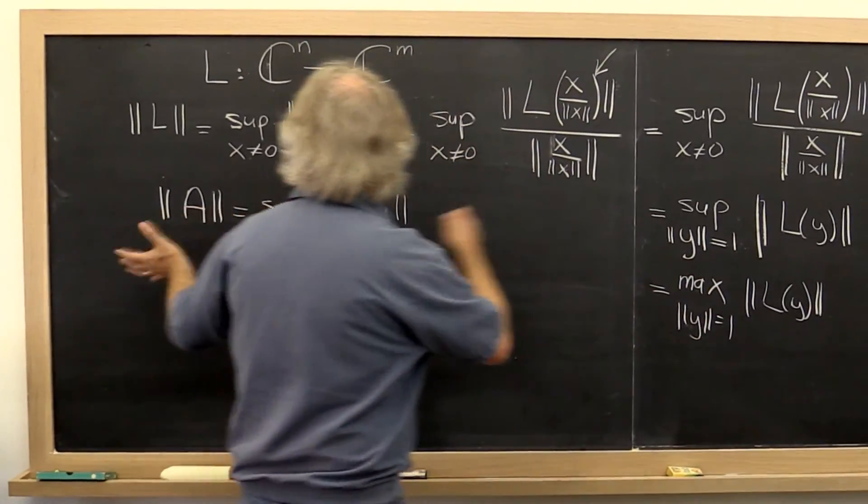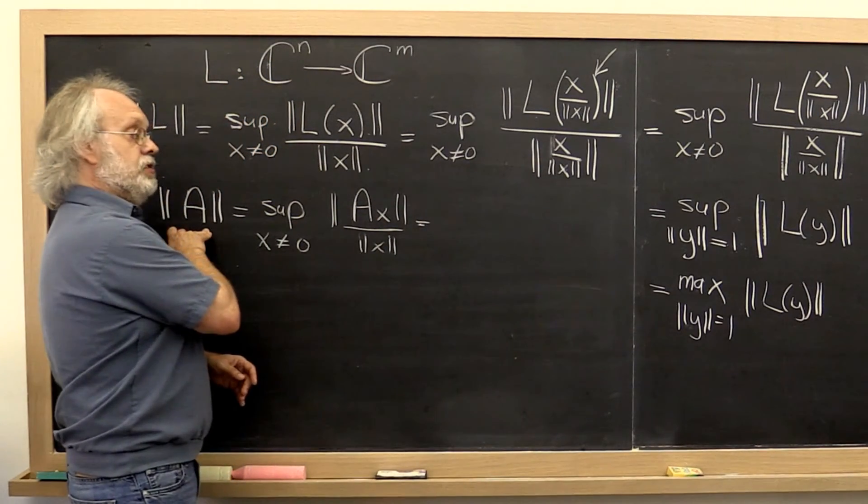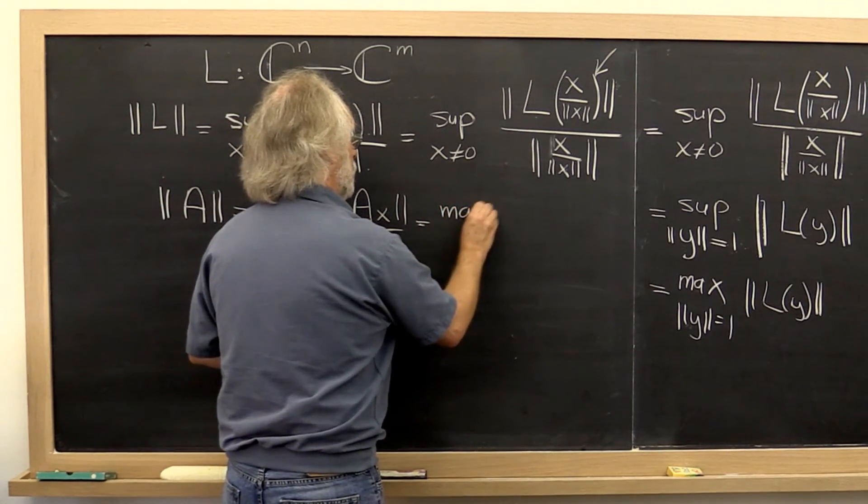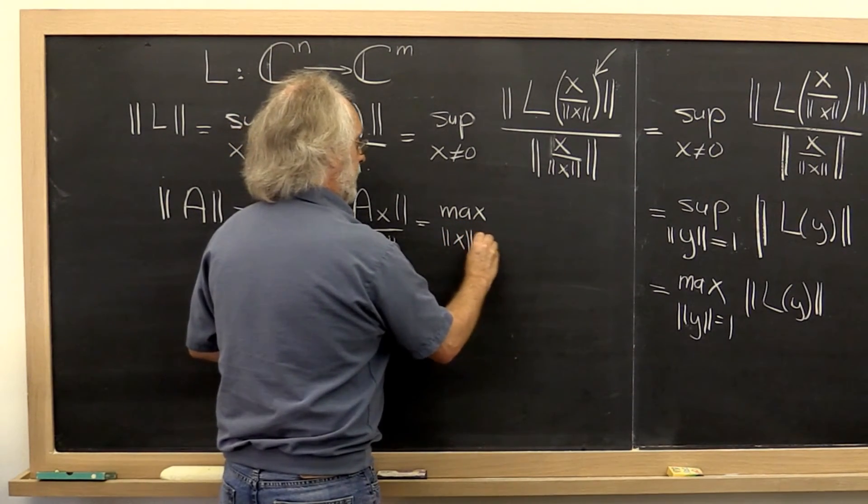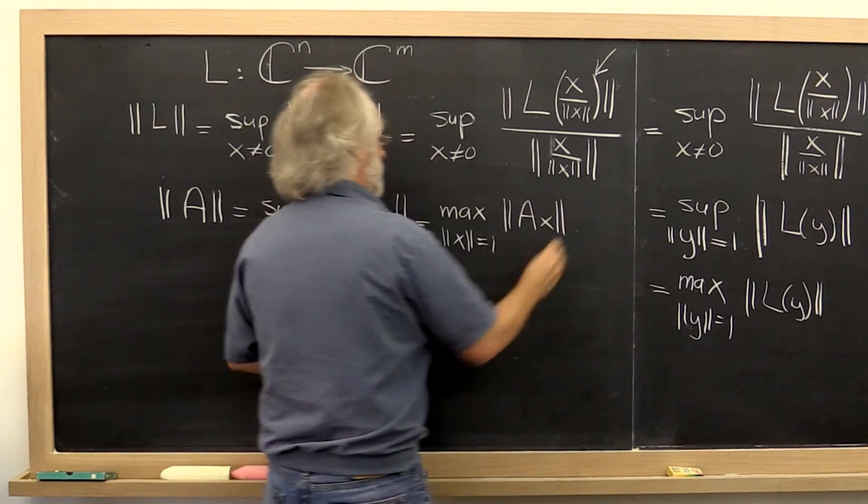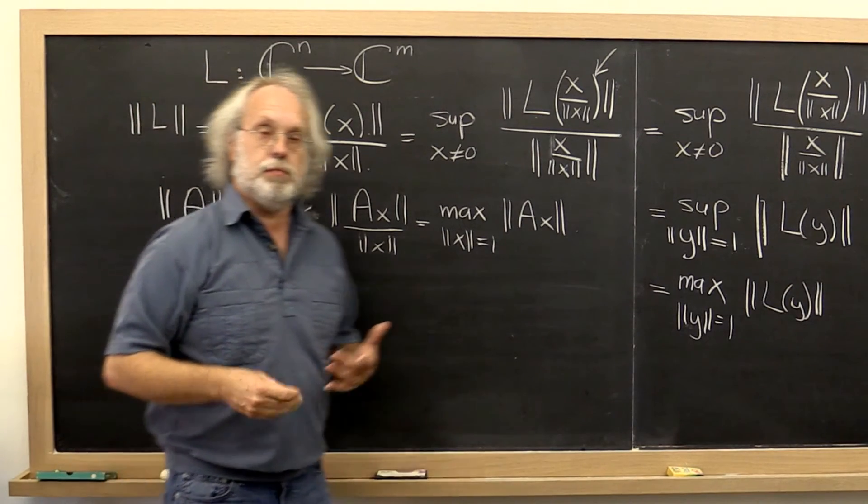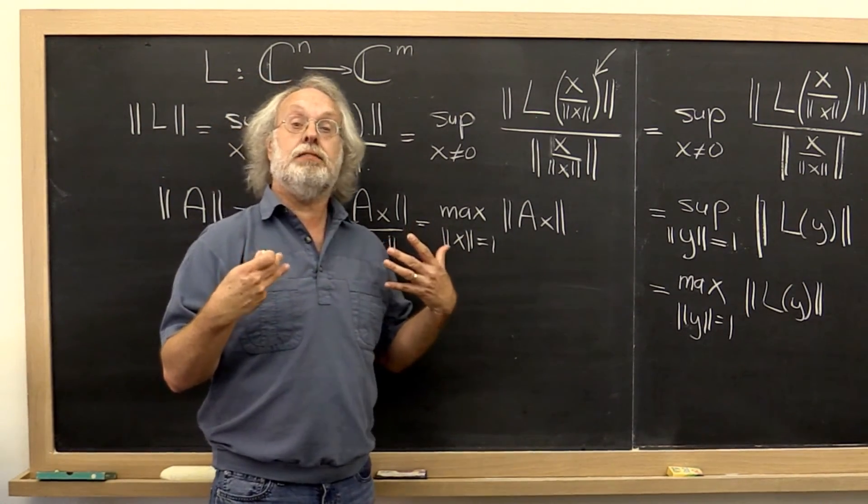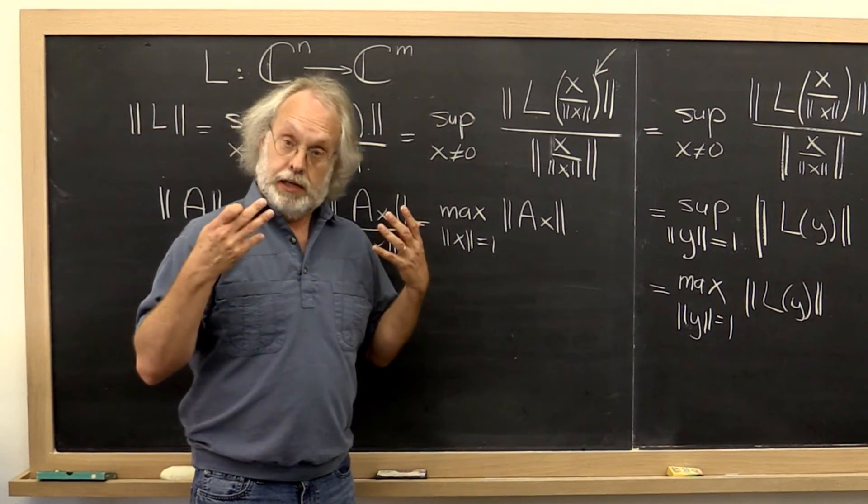And then, of course, you can go back over here and say we can do exactly the same thing when we actually do think of it as a norm over matrices. And you can say, well, that's just equal to the max over all vectors with length equal to 1 of a times x. And you can go back here and say, and we could have just set the maximum instead of the supremum.